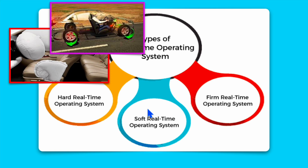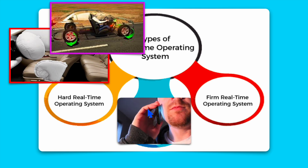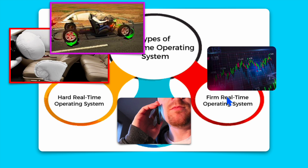Examples of hard real-time systems include the airbag of a car, the ABS (anti-lock braking system), and missiles. For soft real-time, an example is talking over a call — if you miss the voice of the other person it will not cause a serious impact. For firm real-time, an example is a live trading system — if you miss the deadline to update actual data to your users it is not a system failure, but it will reduce your product quality.